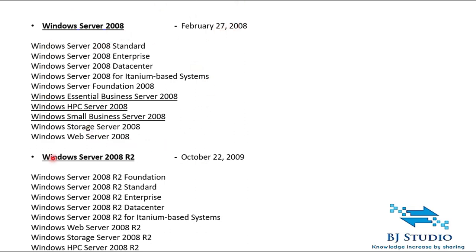Windows Server 2008 had a bunch of editions: Windows Server 2008 Standard, Windows Server 2008 Enterprise, Windows Server 2008 Data Center, Windows Server Foundation 2008, Windows Essential Business Server 2008, Windows Small Business Server 2008, Windows Storage Server 2008, and Windows Web Server 2008. Currently, we are using three of these — Standard, Enterprise, and Data Center. The rest have been largely eradicated and are not used often.